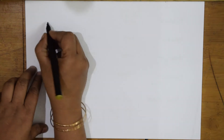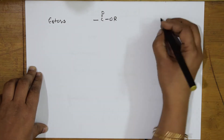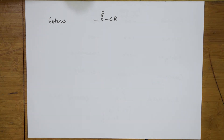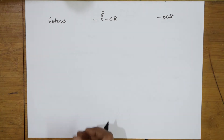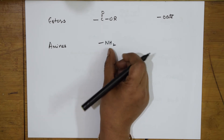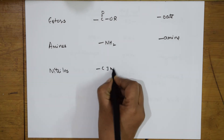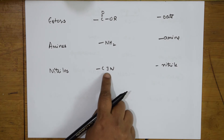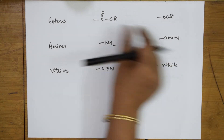Suppose if you have an ester — represented as C double bond OOR — we call it 'ester' or end the word with 'oate'. The suffix is 'oate'. If you have amines — NH2 is amine, whether aliphatic or aromatic — the suffix is 'amine'. Suppose if I have nitriles — the group is C triple bond N — the suffix used is 'nitrile'. This is also called cyano.